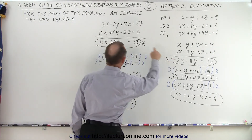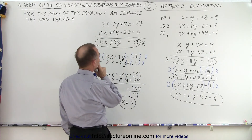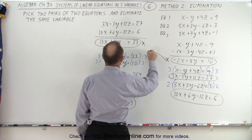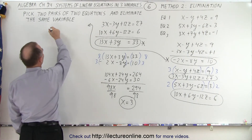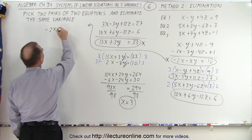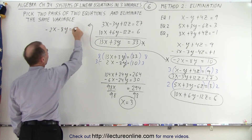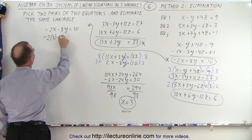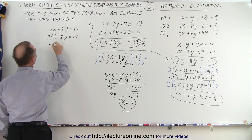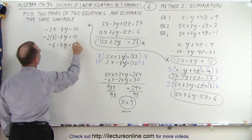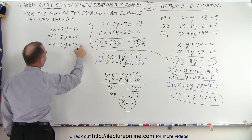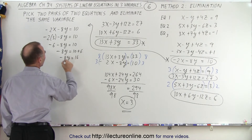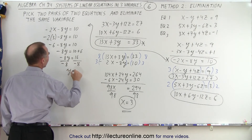To get the other variable y, we take either one of these two equations and solve for y. Let's grab the equation with the smallest numbers: minus 2x minus 8y is equal to 10. We replace x with 3. So minus 2 times 3 minus 8y is equal to 10. That gives minus 6 minus 8y equals 10, so minus 8y equals 16. Divide both sides by negative 8, and y is equal to negative 2.